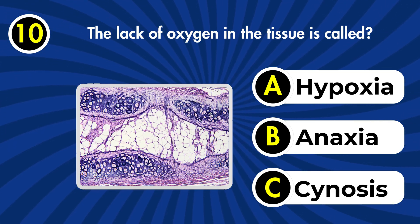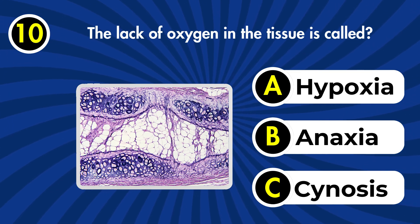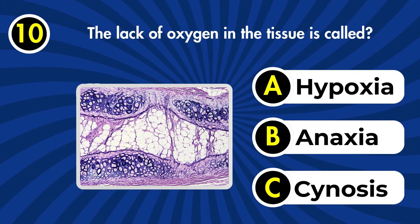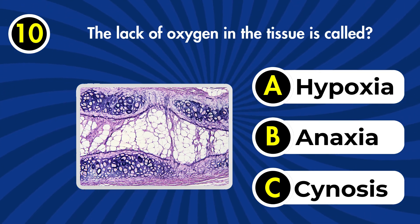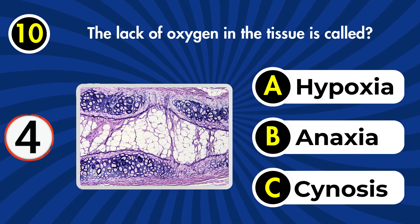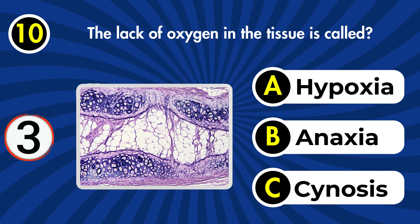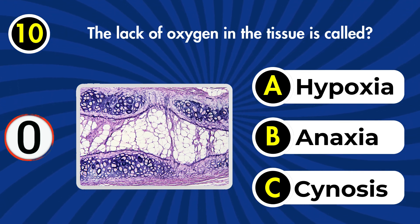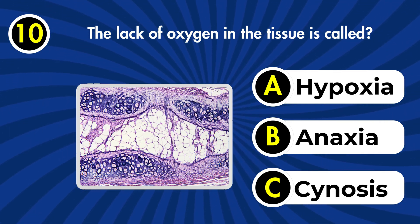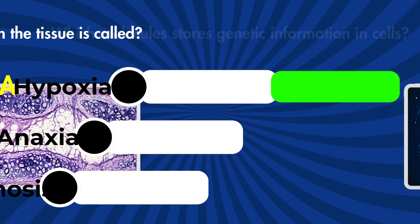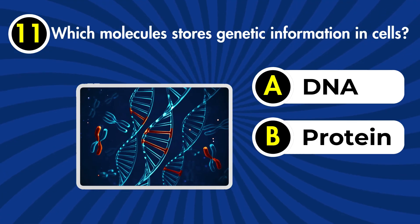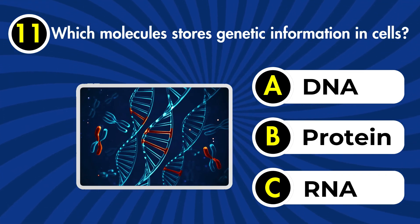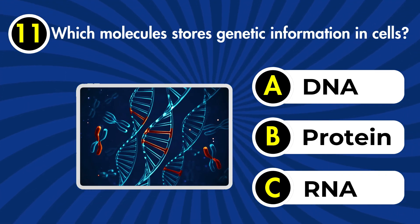Next question: the lack of oxygen in the tissue is called: a) hypoxia, b) anoxia, c) cyanosis. Correct answer: a) hypoxia.